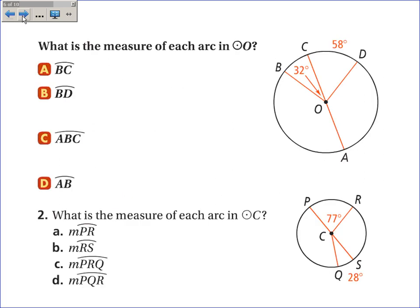A couple other examples. What is the measure of each arc in circle O? BC has an arc of 32 degrees. Right here is 32 degrees. It's the same as the central angle. BD, which combines arcs BC and arc CD, is 90 degrees.